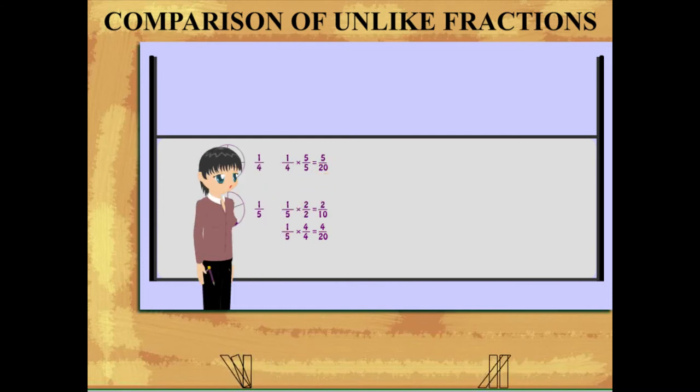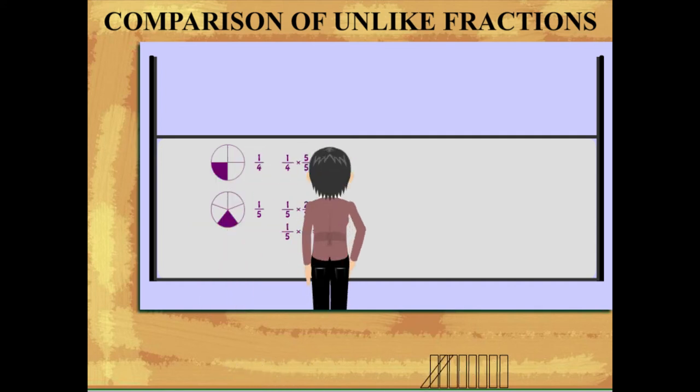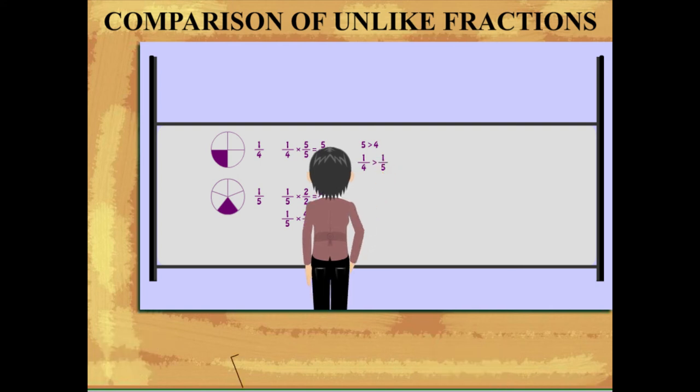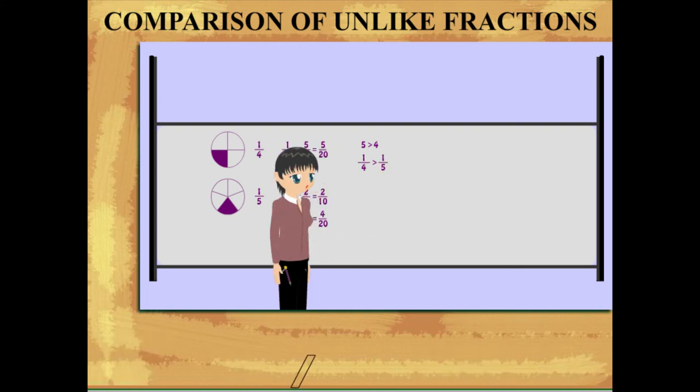With the same denominator of 20, 5 is greater than 4, so 1/4 is greater than 1/5.